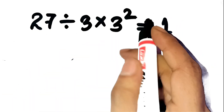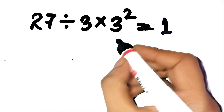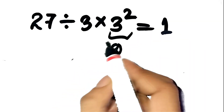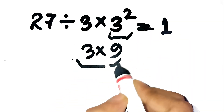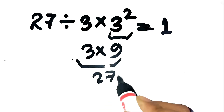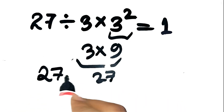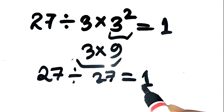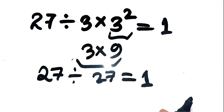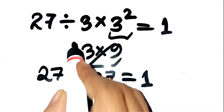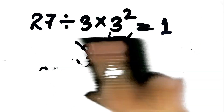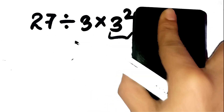You see that little 3 squared, you think that's 9. Then you multiply it by 3 to get 27, and finally you divide 27 by 27 — and boom, you're staring confidently at 1 like you just solved world hunger. But that's exactly the mistake almost everyone makes. Let me walk you through the wrong logic first, just to show how convincing it feels.